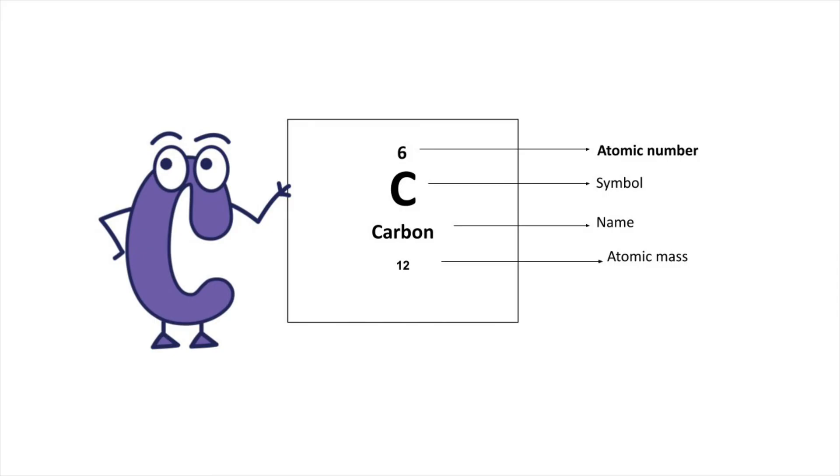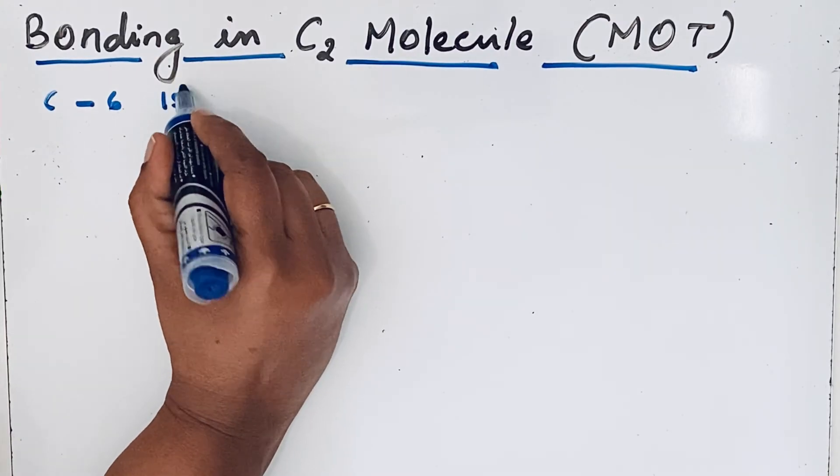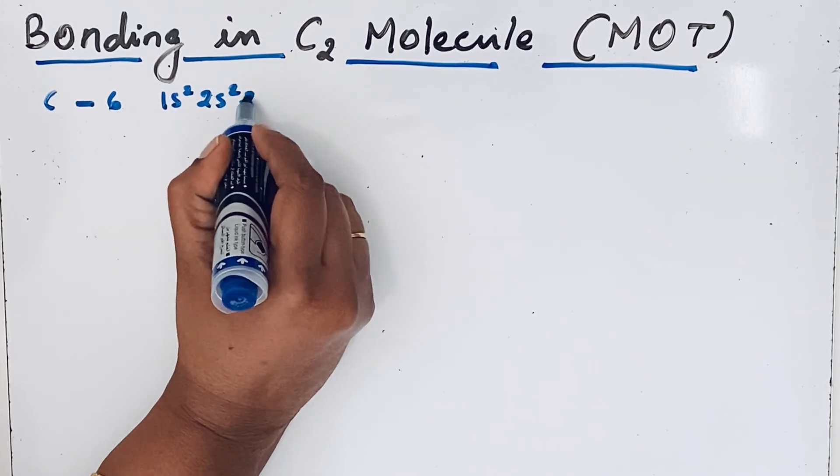C2 molecule is formed by the combination of two carbon atoms, carbon atomic number 6. Its electronic configuration is 1s² 2s² 2p².